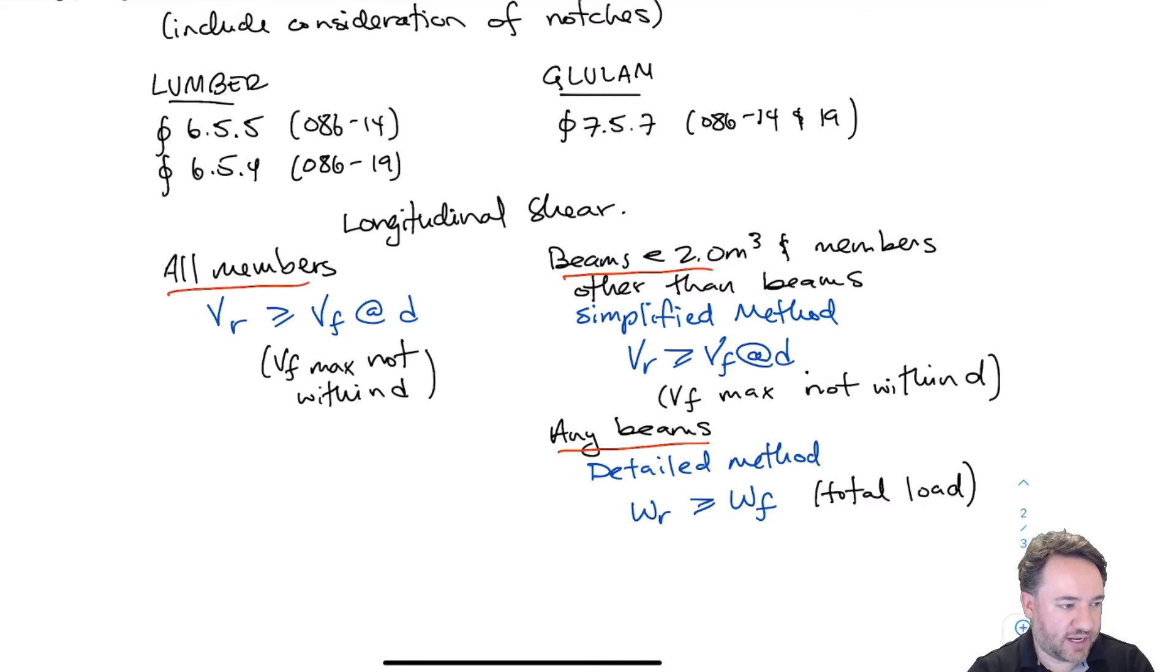On the longitudinal shear for the glulam side, I have two different options for checking my shear resistance. One is for smaller beams with a volume less than 2.0 meters cubed. I can use, and for members that aren't beams, like for beam columns, for example, then I can use the simplified method, which is very similar to the method that's used for lumber, where I also don't have to check within D of the support. And then for any beams, and usually I'll get a benefit for doing this, I can use the detailed method where I check actually the total load resistance versus the total load on the beam. And you remember that the shape of the load is accounted for using the shear load coefficient Cv. And so if I have something that kind of just barely meets the simplified method, or it's not quite meeting the simplified method, then I can get actually a larger resistance by using the detailed method. And that's it for longitudinal shear.